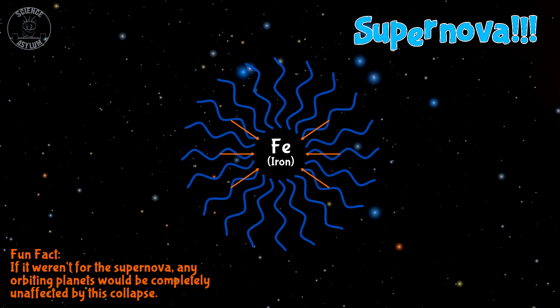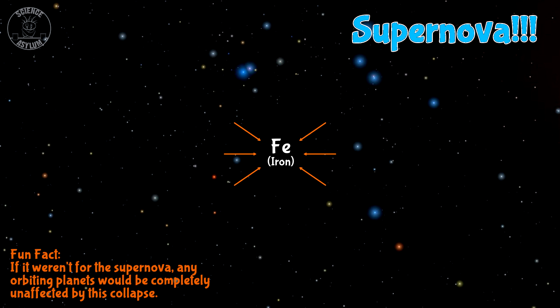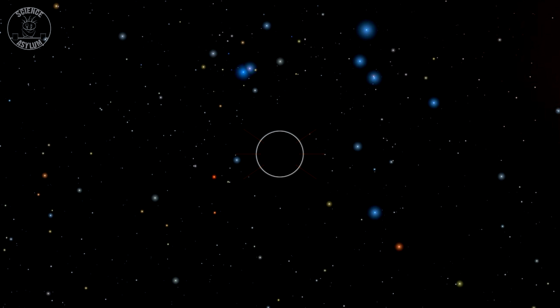This sudden release of energy blasts most of the outer layers away in a brilliant explosion called a supernova. Only the iron core is left to continue collapsing into the black hole.